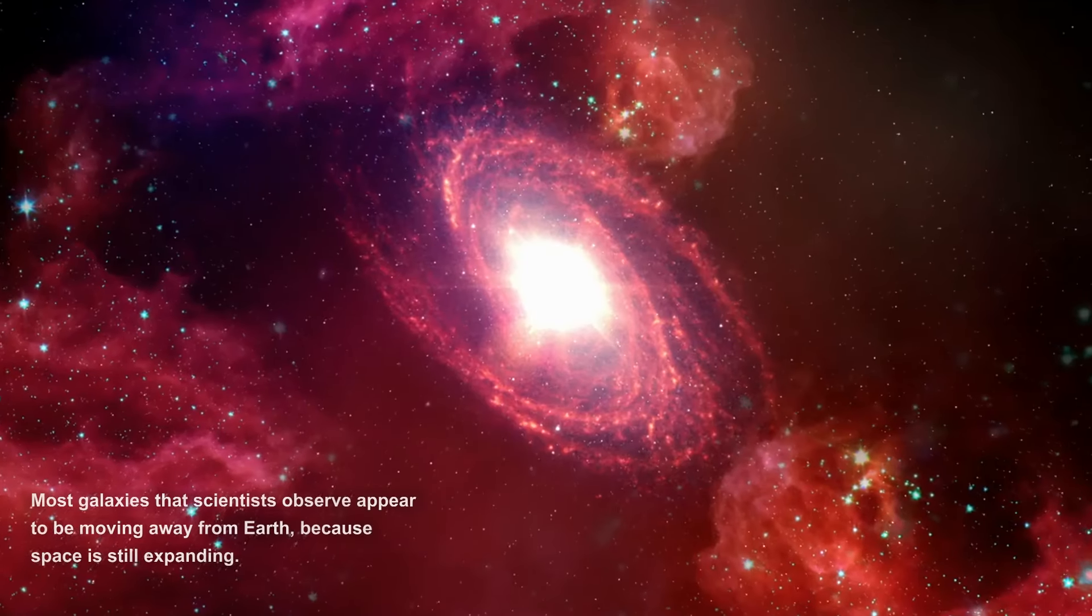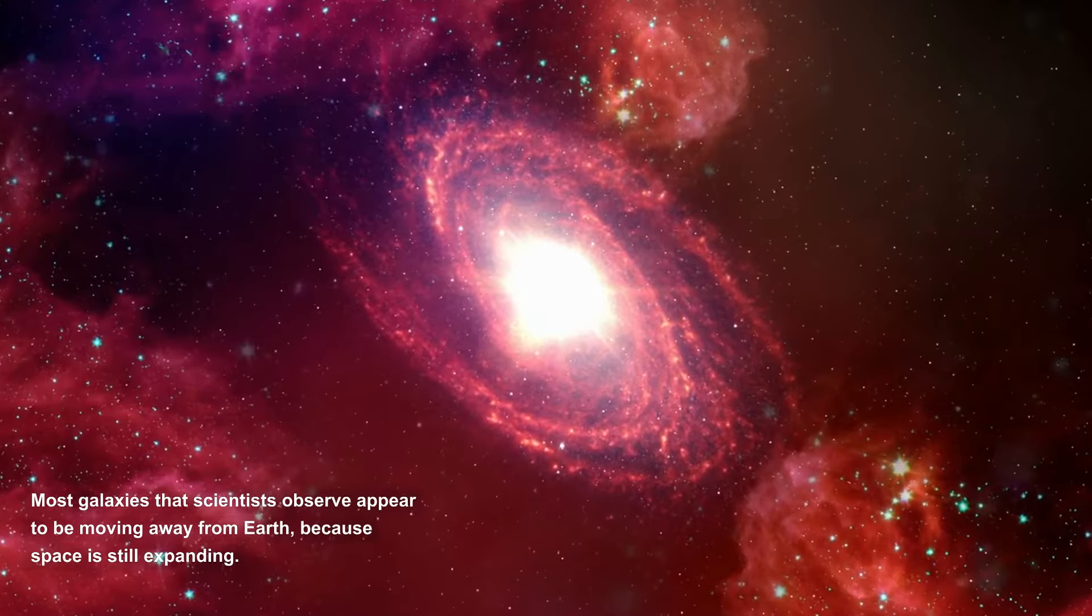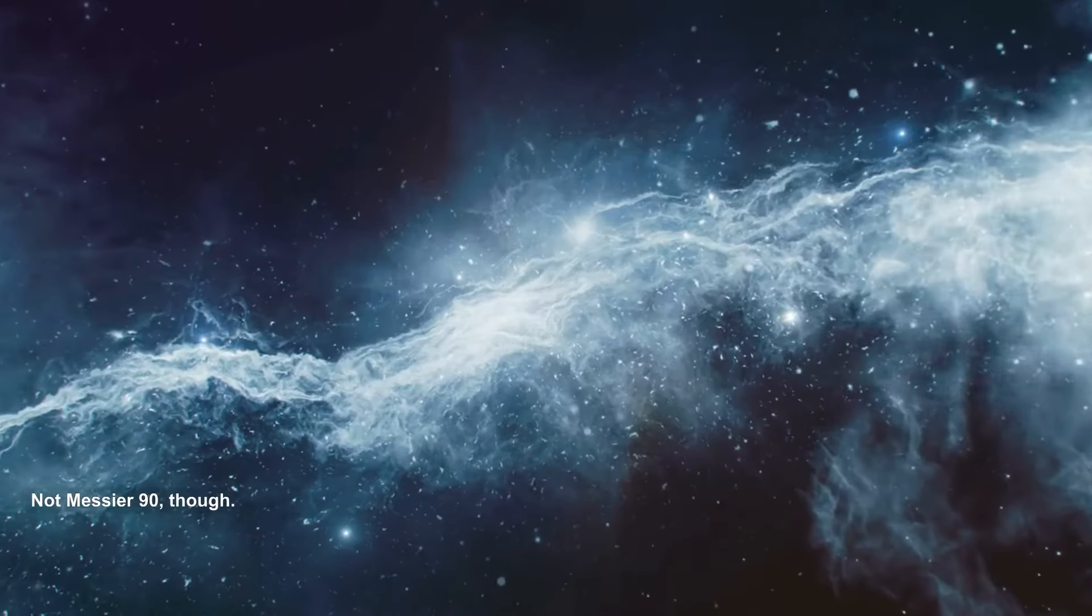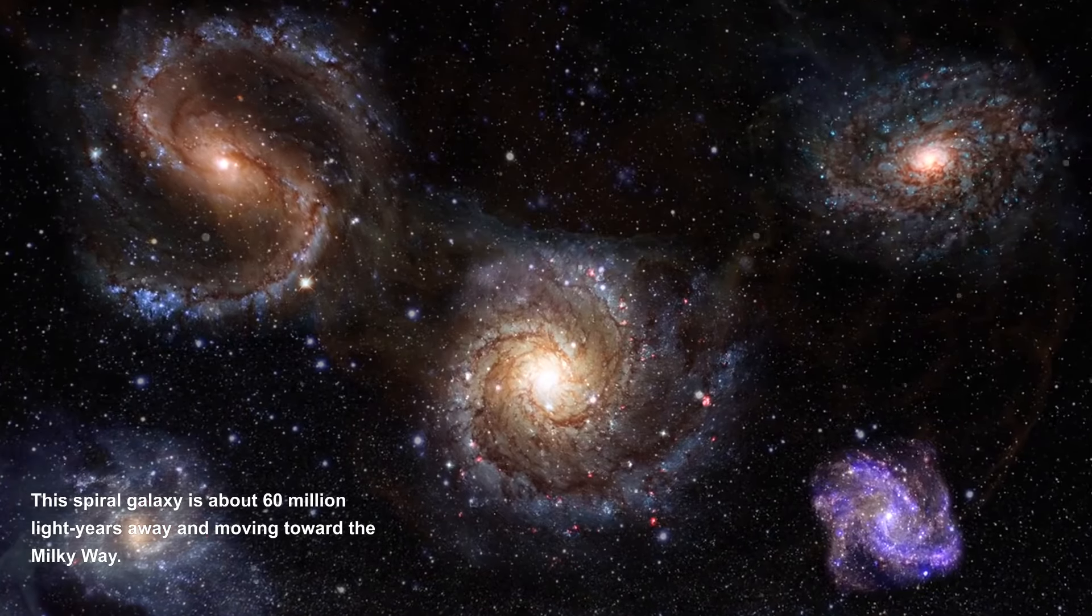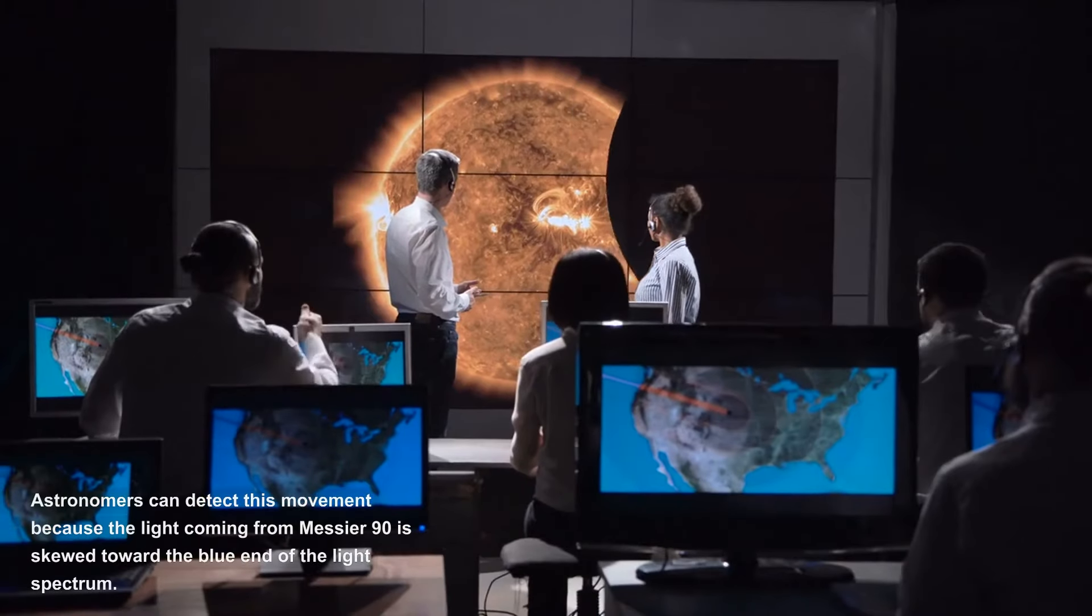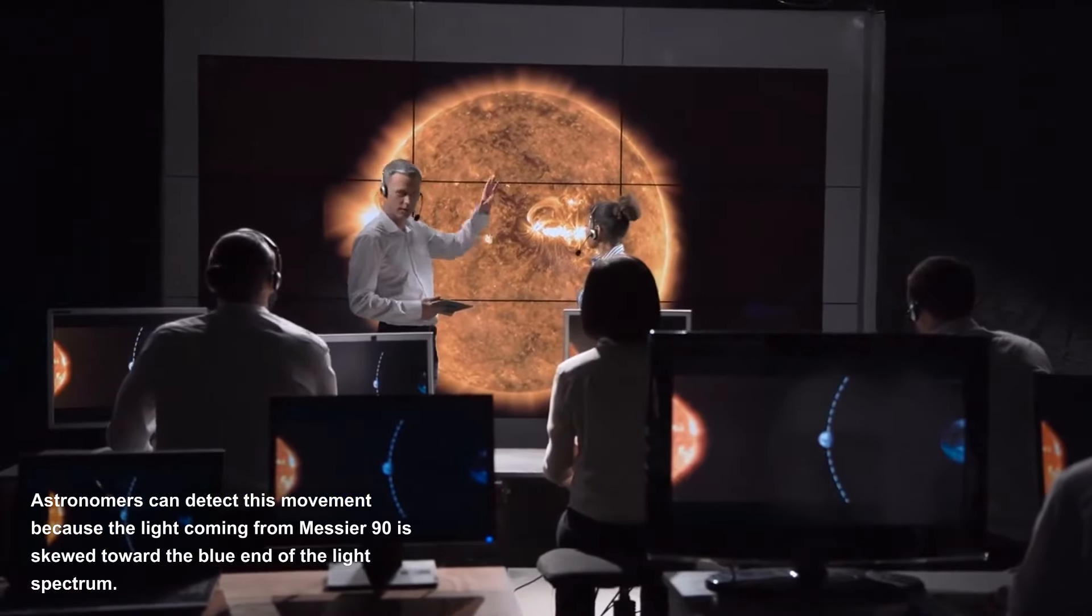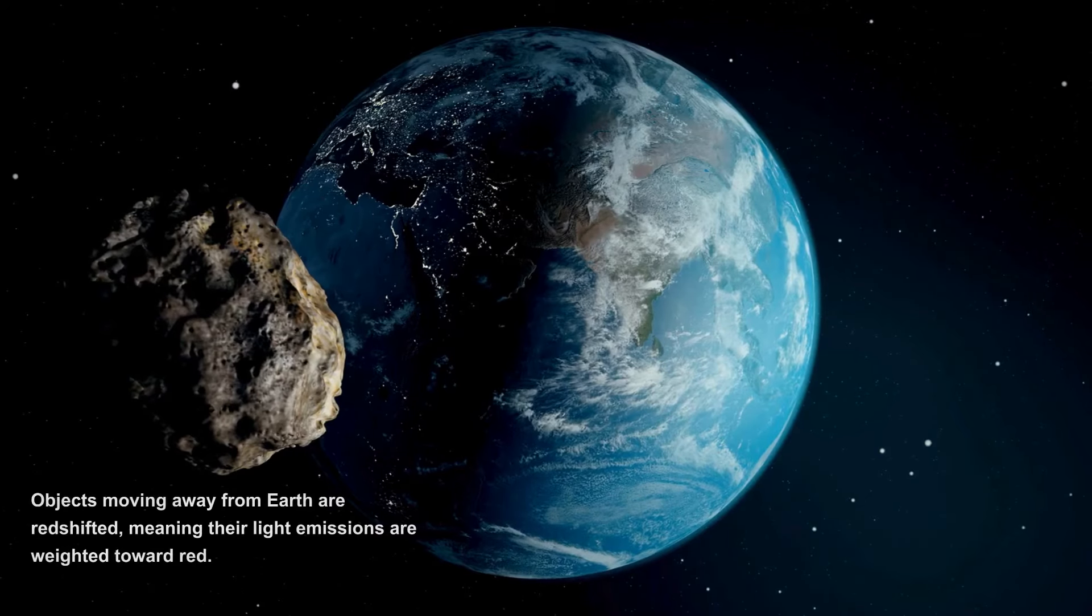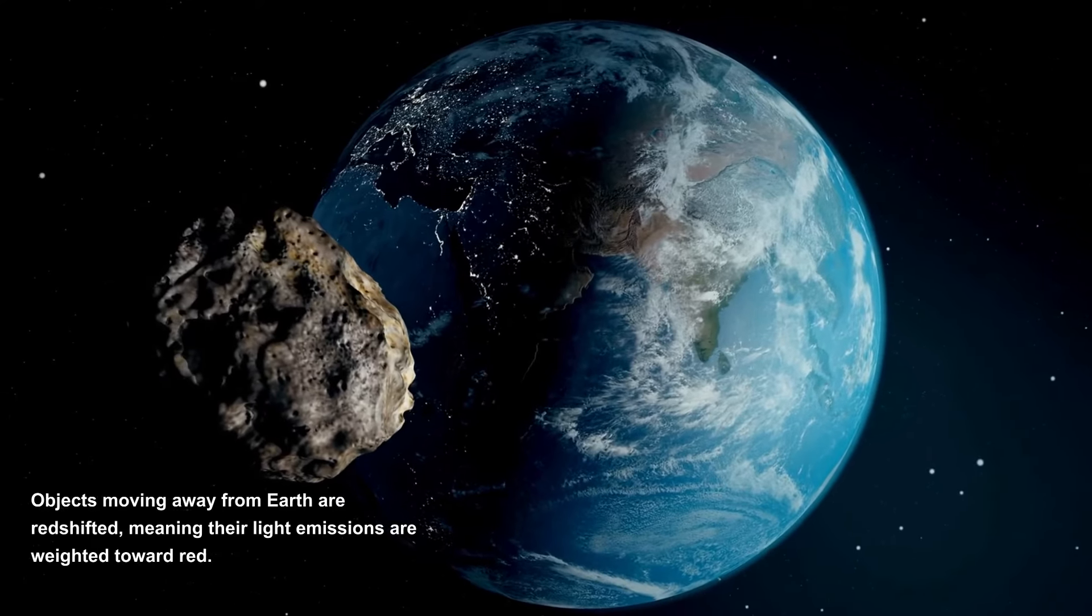This galaxy is coming our way. Most galaxies that scientists observe appear to be moving away from Earth, because space is still expanding. Not Messier 90, though. This spiral galaxy is about 60 million light years away and moving toward the Milky Way. Astronomers can detect this movement because the light coming from Messier 90 is skewed toward the blue end of the light spectrum. Objects moving away from Earth are red-shifted, meaning their light emissions are weighted toward red.